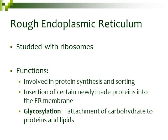The rough endoplasmic reticulum is studded with ribosomes. Ribosomes help in protein synthesis, so one of the functions of the rough ER is that it's involved in protein synthesis. It's also involved in sorting these proteins. Some of the proteins that are created can be inserted into the ER membrane, and then those proteins can go through a process called glycosylation — attaching a carbohydrate to a protein or to a lipid.